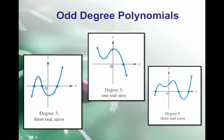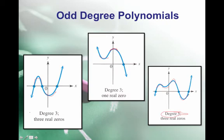Similarly, here's another degree 3 polynomial — two turning points, so 2 + 1 = degree 3. Again, domain and range is (-∞, ∞). For the degree 5 example, we count 4 turns, and 4 + 1 = 5. Because it is an odd degree polynomial, the domain and range is (-∞, ∞).